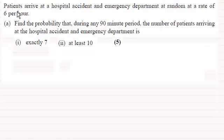We've got here that patients arrive at a hospital accident and emergency department at random at a rate of six per hour, and we've got to find the probability that during any 90 minute period the number of patients arriving at the hospital accident and emergency department is exactly seven.